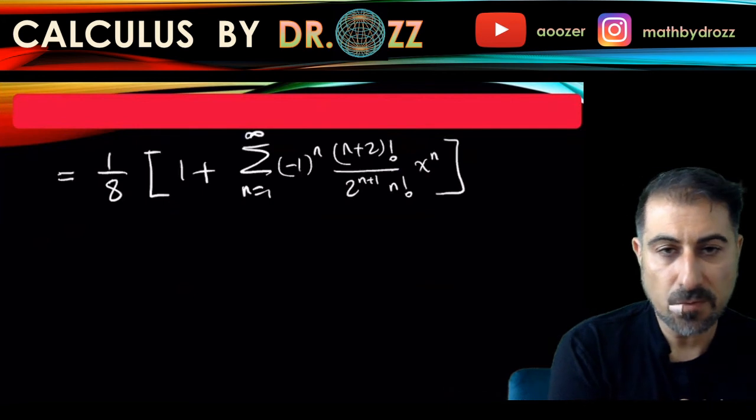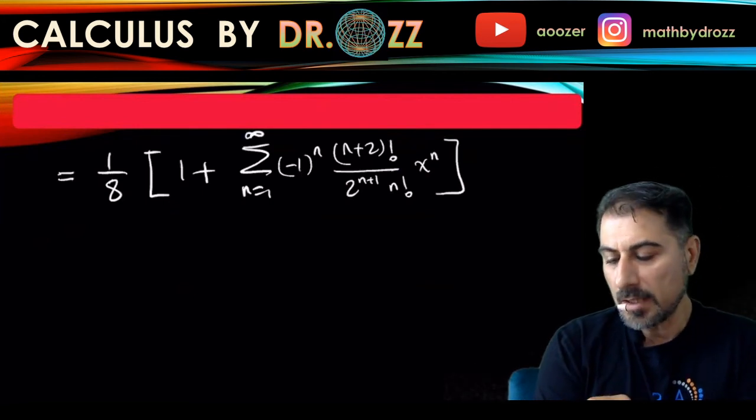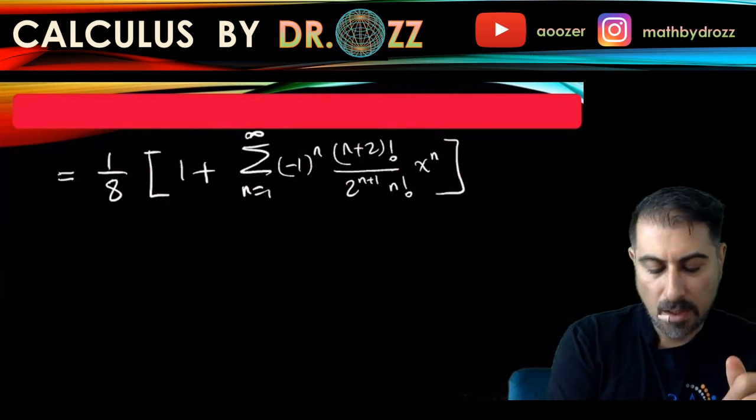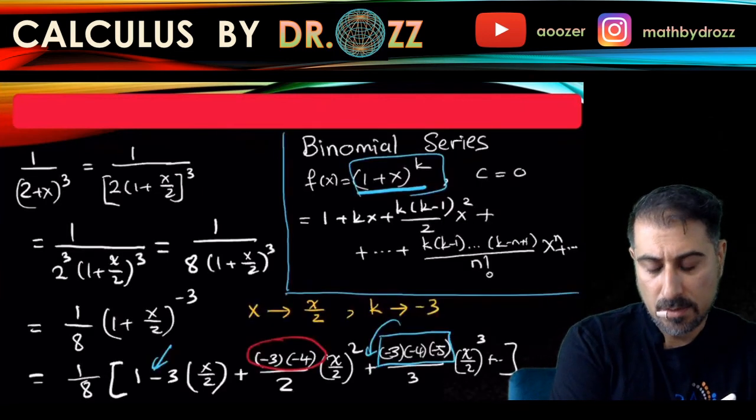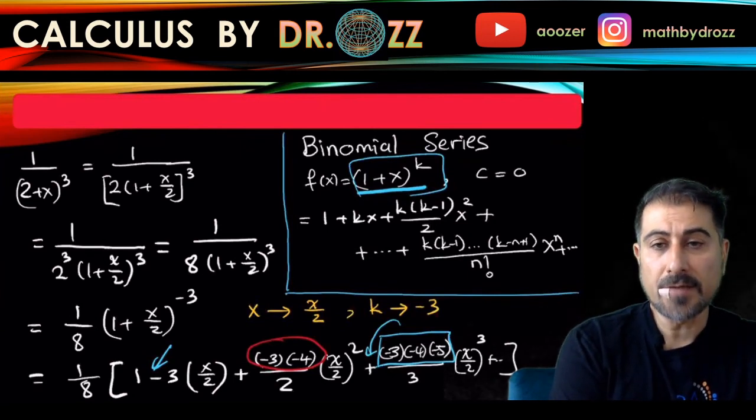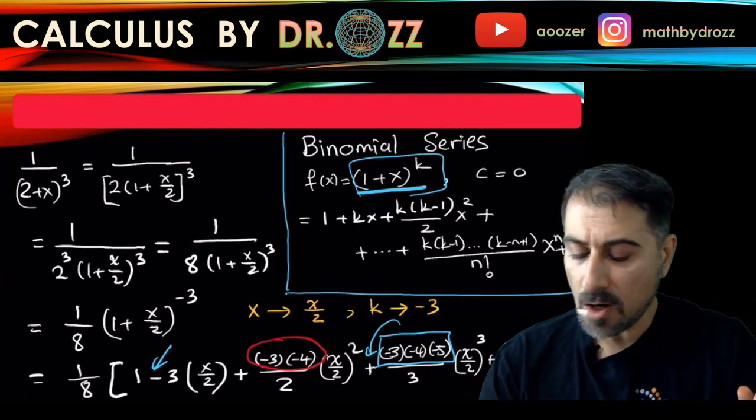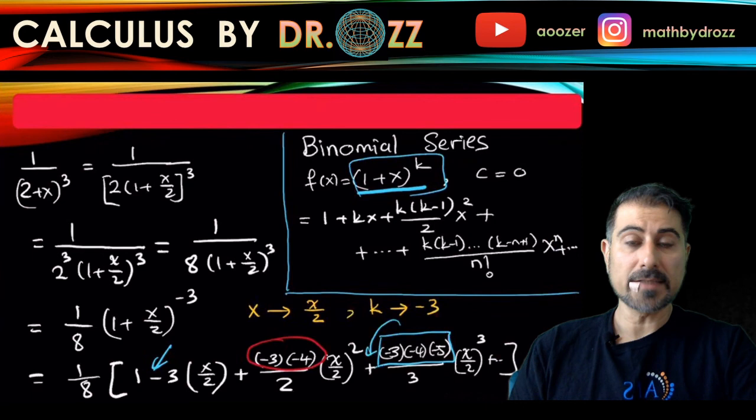You don't need to write this full form if you can't catch the pattern here. Even this long form, the expanded form, is good enough to conclude that you have the nice power series representation of 1 over (2 + x) quantity cubed in terms of binomial series.